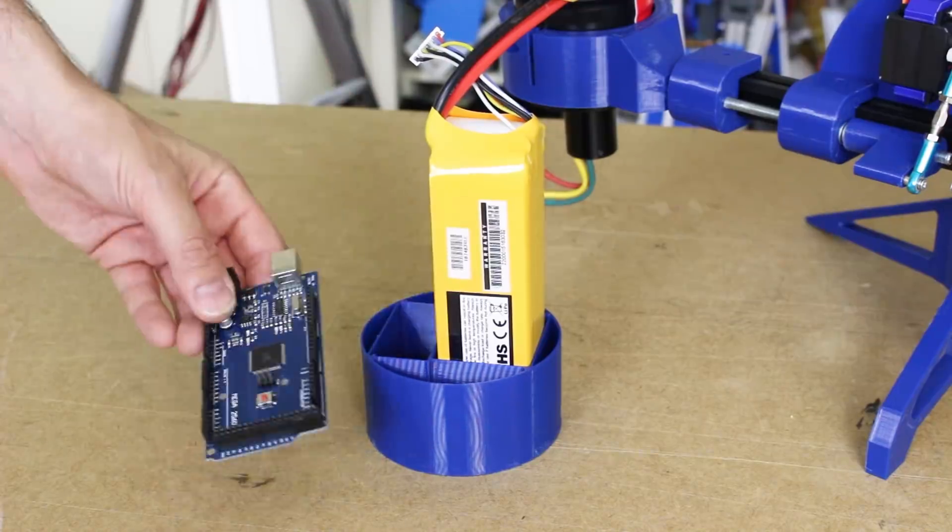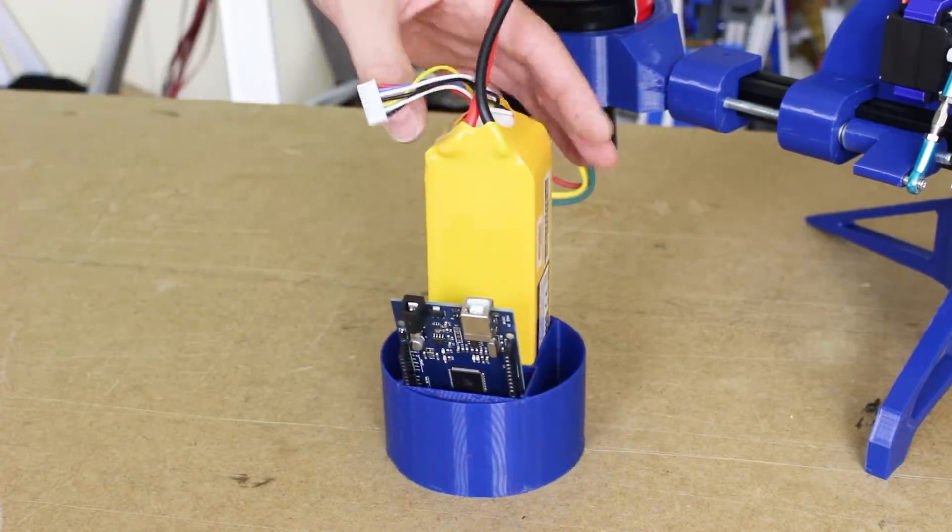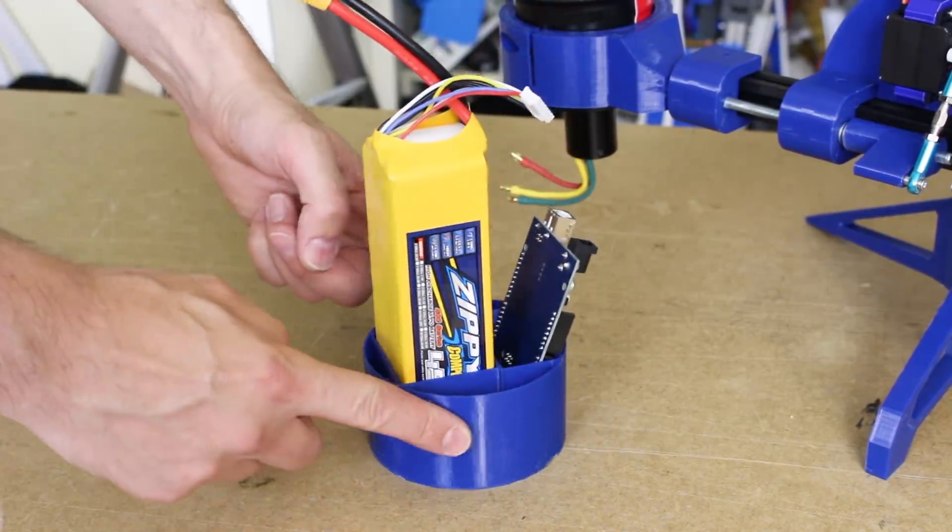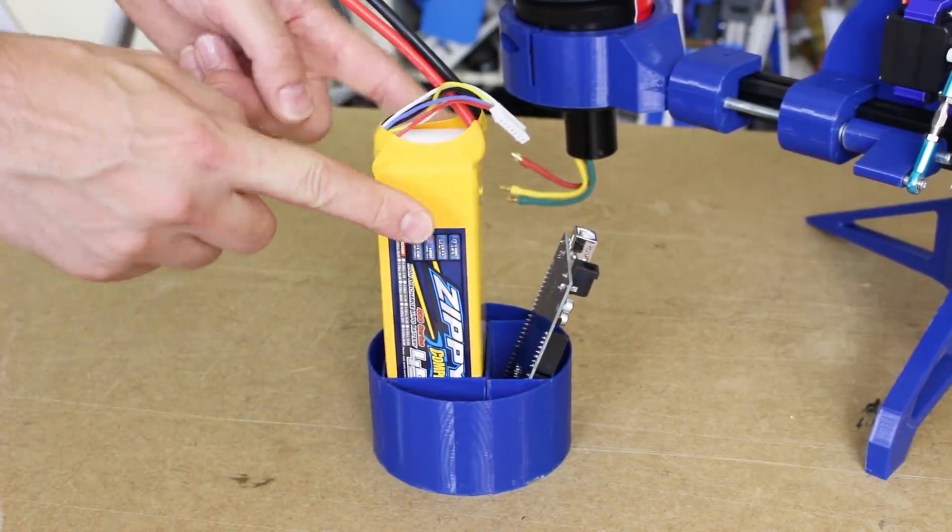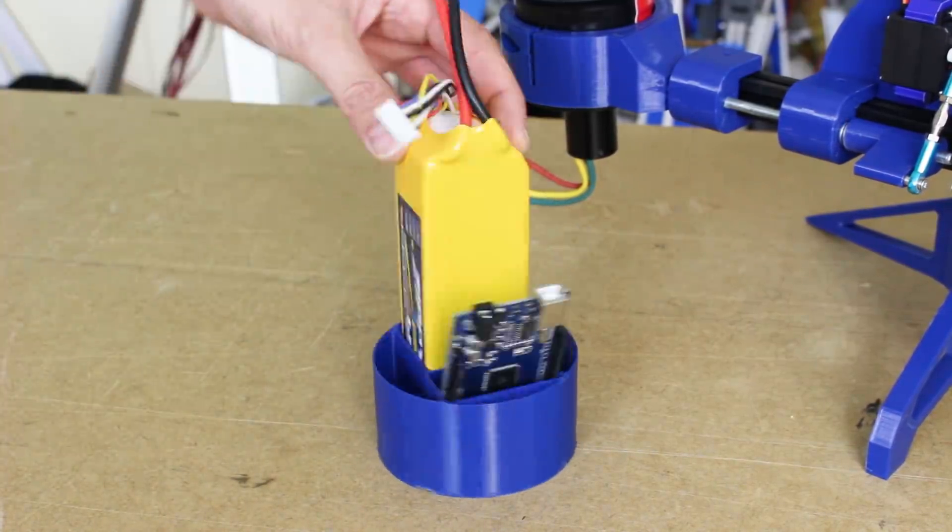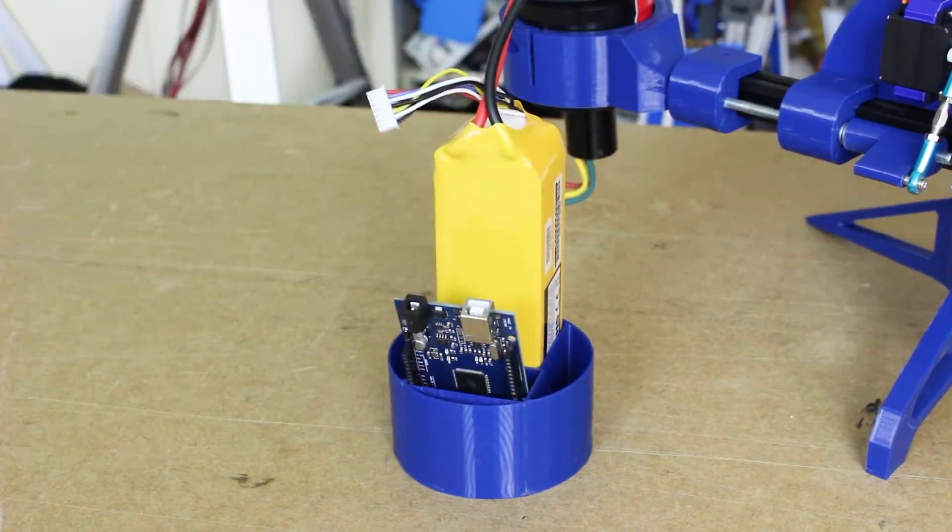So I've made this little mount here that holds an Arduino Mega, and the LiPo that's going to power everything, and that just slots into the top of the rocket. We'll keep the mass at the top, because that's the easiest way to balance a stick by moving the bottom. We also need an inertial measurement unit, and some other bits and pieces.